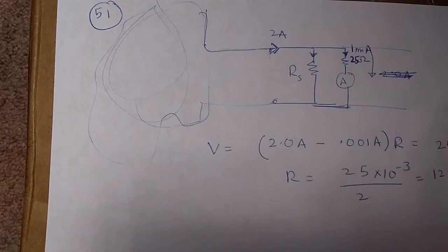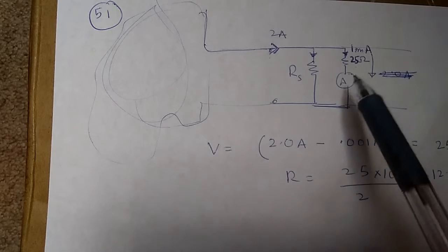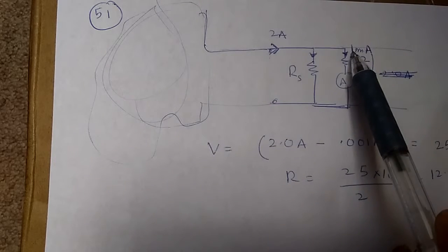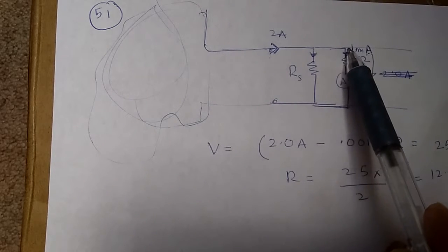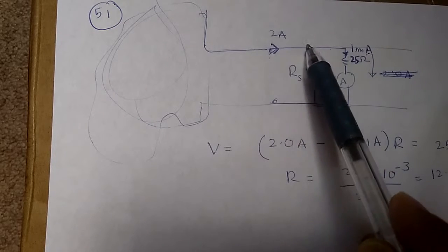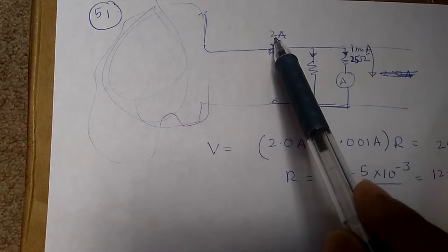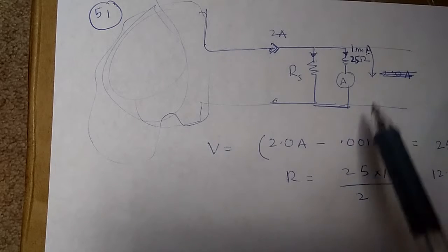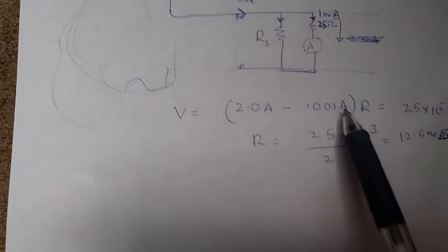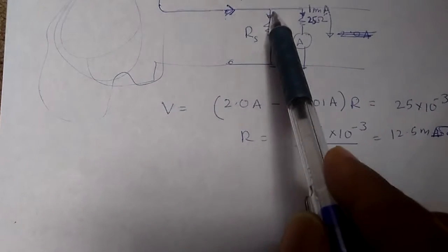So let us say the ammeter can take only 1 mA. So let 1 mA flow through the ammeter. The remaining current through the shunt resistor is going to be 2 ampere minus 1 mA, or approximately 2 ampere. That is the current flowing through the shunt.